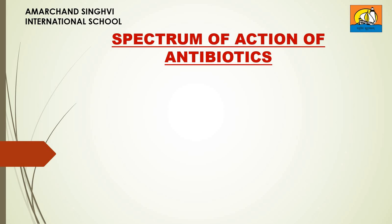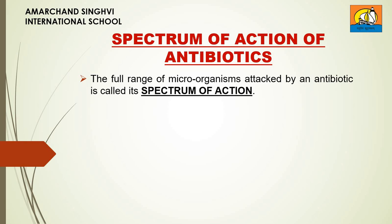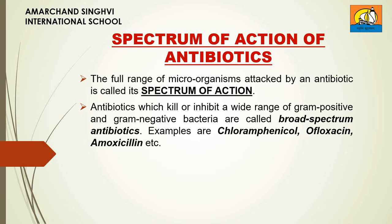Let's now discuss the spectrum of action of antibiotics. The full range of microorganisms that can be attacked by a specific antibiotic is called its spectrum of action. Antibiotics which kill or inhibit a wide range of gram-positive and gram-negative bacteria are called broad-spectrum antibiotics. Examples are chloramphenicol, ofloxacin, amoxicillin, etc.